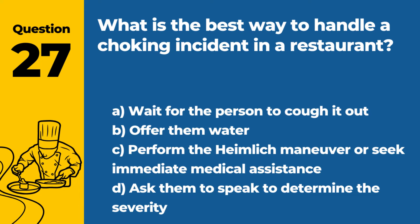Question 27. What is the best way to handle a choking incident in a restaurant? a. Wait for the person to cough it out. b. Offer them water. c. Perform the Heimlich maneuver or seek immediate medical assistance. d. Ask them to speak to determine the severity. Answer c. Perform the Heimlich maneuver or seek immediate medical assistance. In the event of a choking incident, the Heimlich maneuver should be performed or immediate medical assistance should be sought.